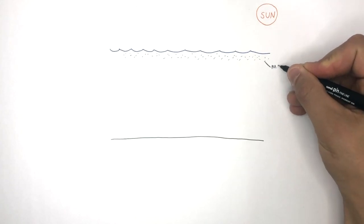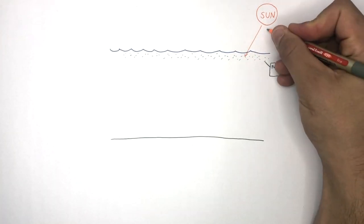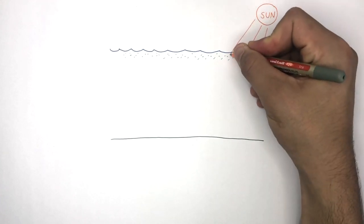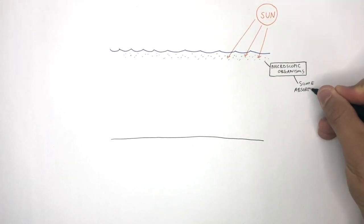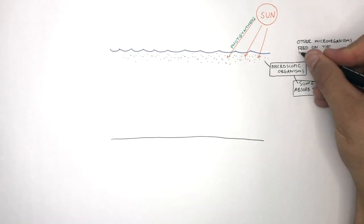These dots represent the microscopic organisms. The microscopic organisms grew a lot where there was a lot of sunlight, as some would absorb sunlight by photosynthesis, whilst other microorganisms would feed on the photosynthetic microorganisms.